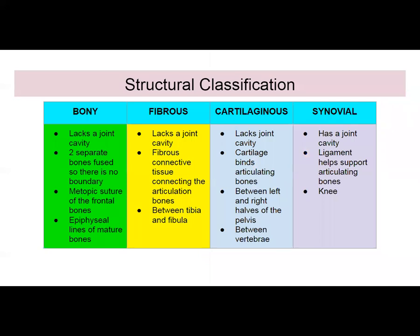There are four big structural categories: bony articulations, fibrous articulations, cartilaginous articulations, and synovial articulations. Bony joints lack a joint cavity. Two separate bones get fused, so there's no boundary between the two. An example would be the metopic suture on your frontal bones, as well as the epiphyseal lines of mature bones.